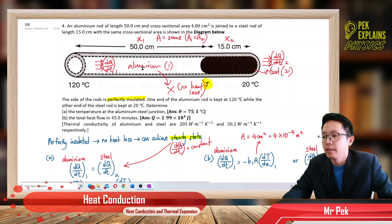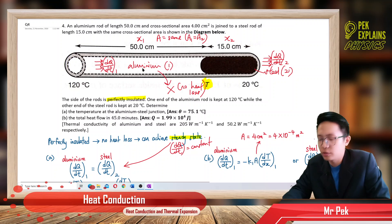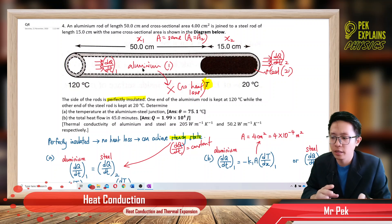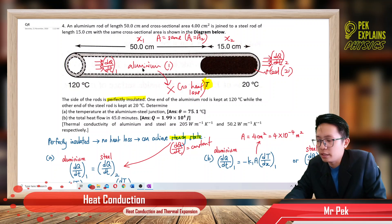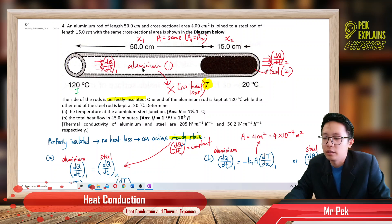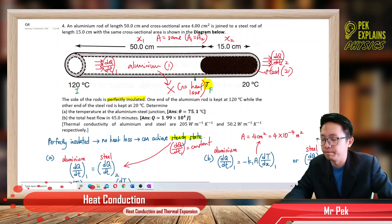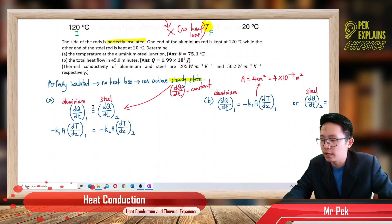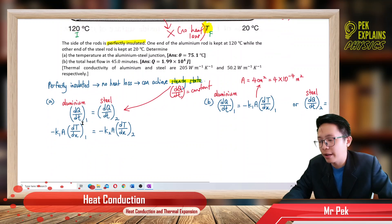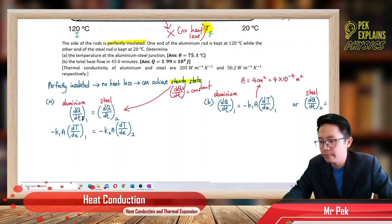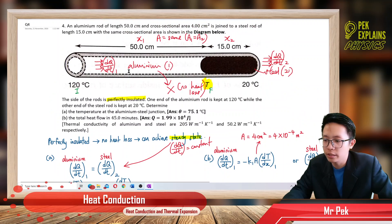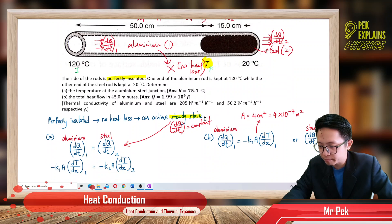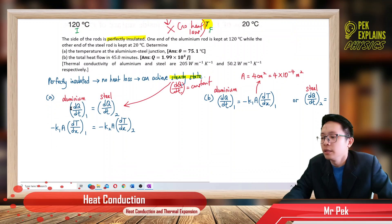Heat always flows from hot to cold. For aluminium, the initial temperature is 120°C and the final temperature is T. To find the temperature at the joint, we apply the formula for steady state: the rate of heat flow in aluminium (rod 1) equals the rate of heat flow in the steel (rod 2). We apply the formula dQ/dt = −K·A·dT/dx for both rods.